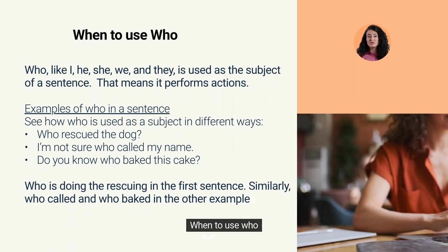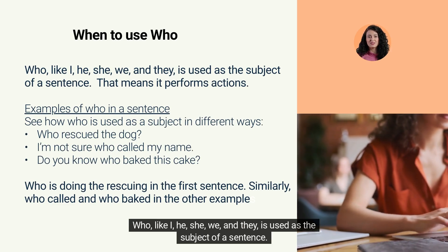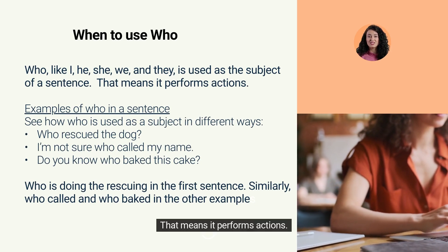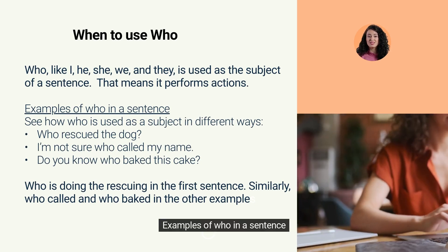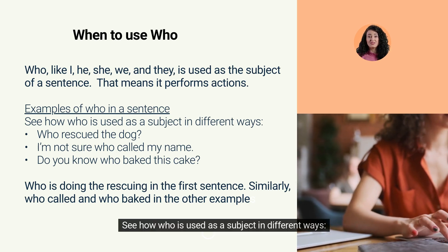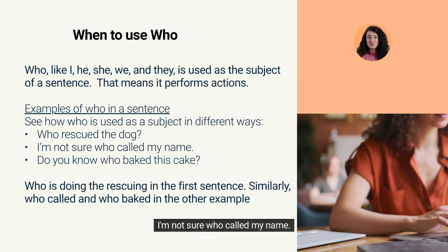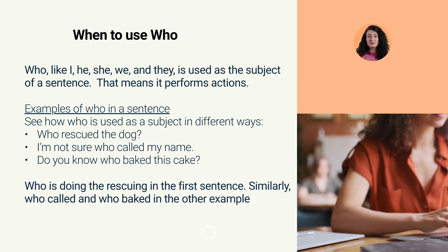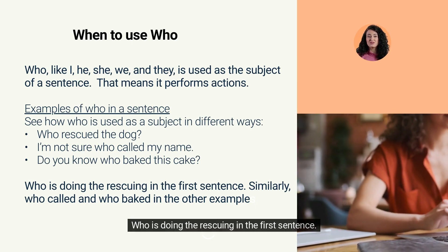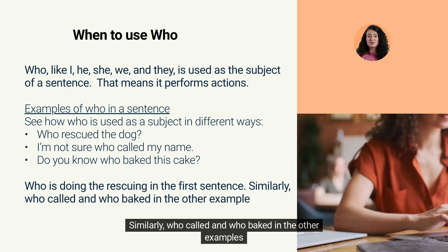When to use who. Who, like I, he, she, we, and they, is used as the subject of a sentence — that means it performs actions. Examples of who in a sentence: see how who is used as a subject in different ways. Who rescued the dog? I'm not sure who called my name. Do you know who baked this cake? Who is doing the rescuing in the first sentence. Similarly, who called and who baked in the other examples.